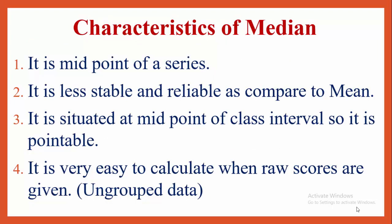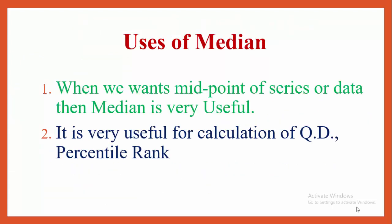Characteristics of median: it is the midpoint of a series. It is less stable and reliable compared to mean. It is situated at the midpoint of the class interval, so it is pointable. It is very easy to calculate when ungrouped data is given. Uses of median: when we want the midpoint of a series or data, median is very useful. It is very useful for calculation of quartile deviation and percentile rank.